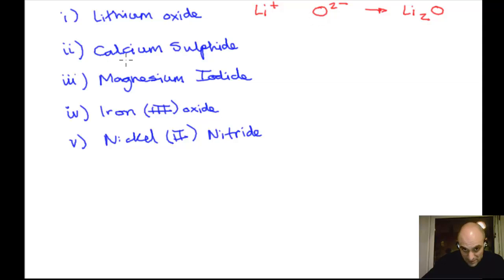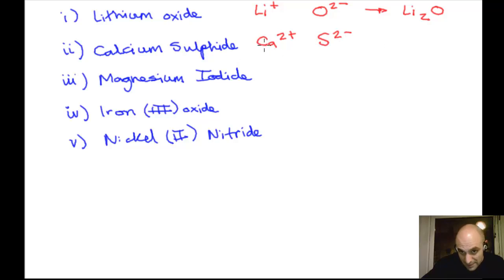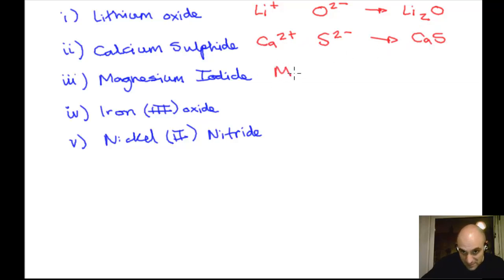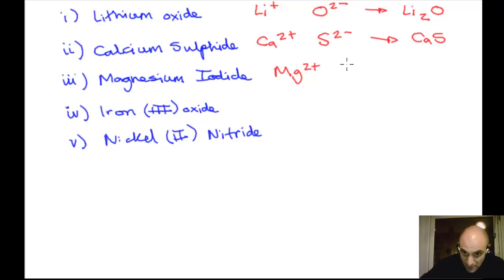Magnesium iodide: magnesium is in group two — Mg²⁺. Iodine is in group seven, gains one electron — I⁻. The compound is MgI₂: Mg²⁺ is the cation, I⁻ is the anion.